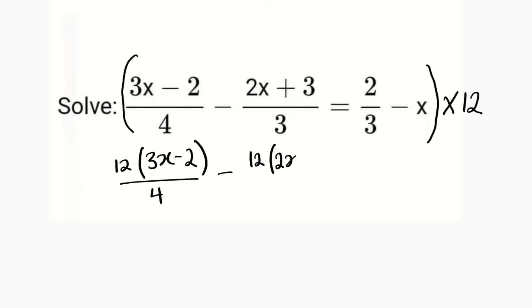...multiplied by (2x + 3) divided by 3. This equals 12 multiplied by 2 divided by 3, minus 12 multiplied by x, which is 12x. To clear the fractions, we know that 4 can go into 12 three times.